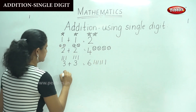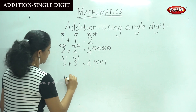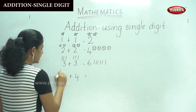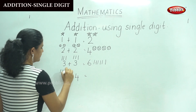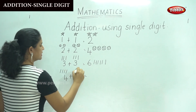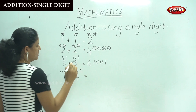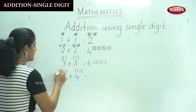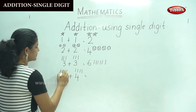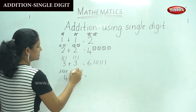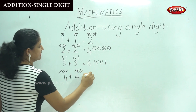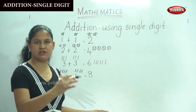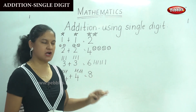The next number is 4 plus 4. Drawing 4 on each side: 1, 2, 3, 4. We have to count to know the answer: 1, 2, 3, 4, 5, 6, 7, 8. So this makes it easy for us to count if we use symbols. 4 plus 4 gives us 8.